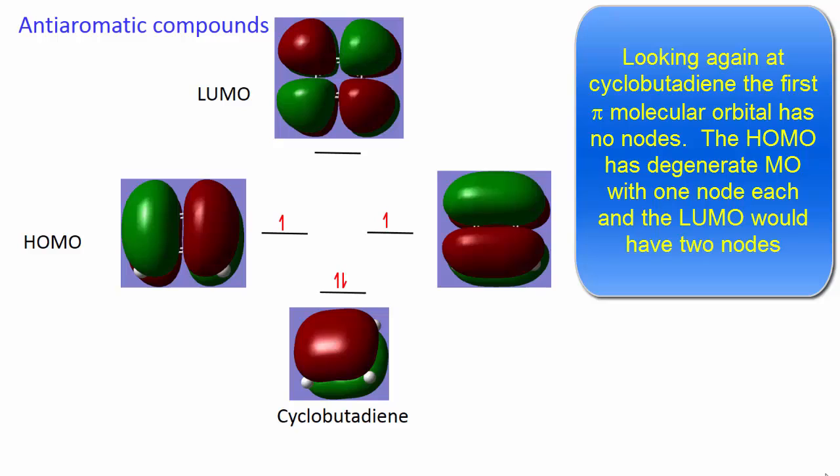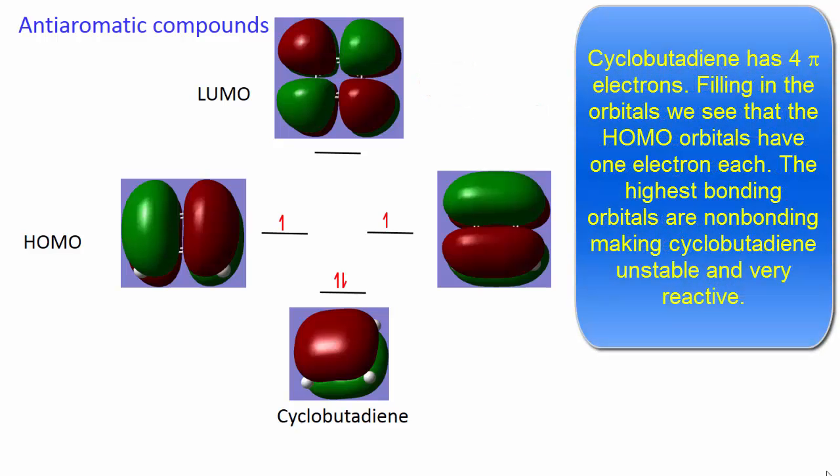Looking again at cyclobutadiene, the first pi molecular orbital has no nodes. The HOMO has degenerate molecular orbitals with 1 node in each, and the LUMO has 2 nodes. Cyclobutadiene has 4 pi electrons. Filling in the orbitals, we see that the highest occupied molecular orbitals have 1 electron each. The highest bonding orbitals are non-bonding, making cyclobutadiene unstable and very reactive.